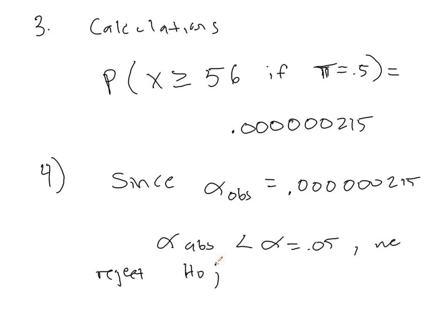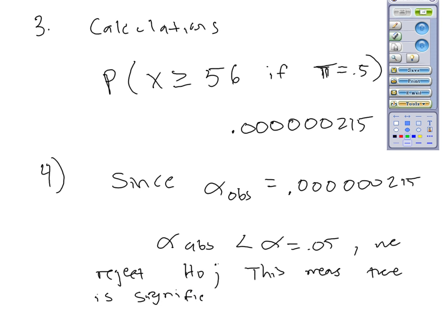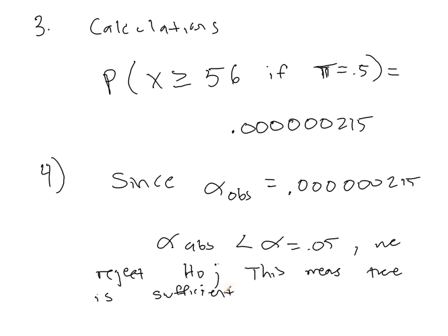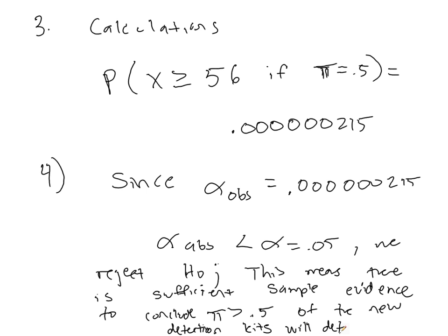So next we want to state what implication this has, what does this mean? This means there is sufficient sample evidence to conclude that pi is greater than 50% of the new detection kits will detect the gas.